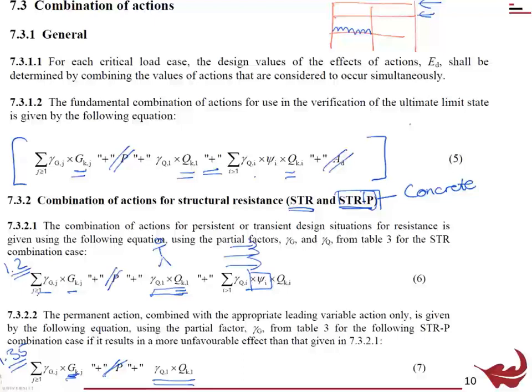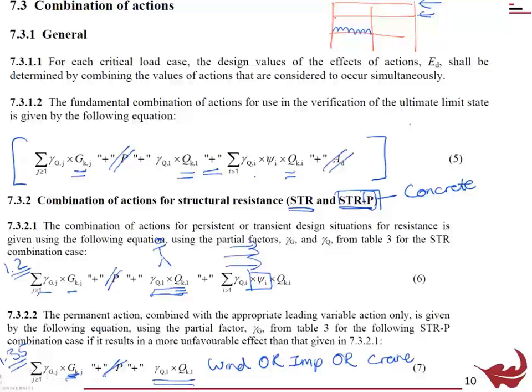For the STRP case, you only have one leading action — either wind, imposed, or crane — not all of them acting at the same time if they're uncorrelated. So you have one maximum imposed load and maximum permanent load plus one or the other. Whereas for the STR case above, you have multiple imposed load cases being considered together.